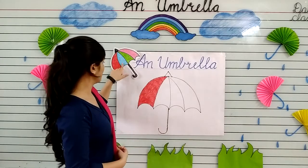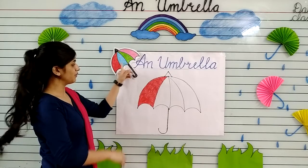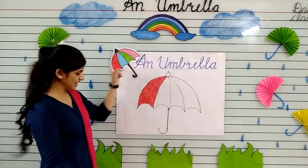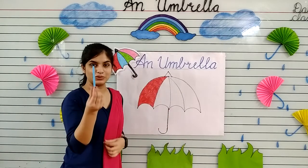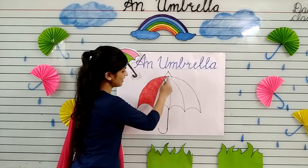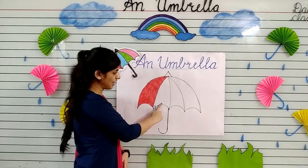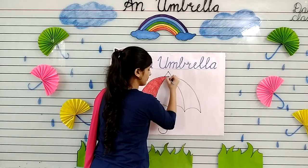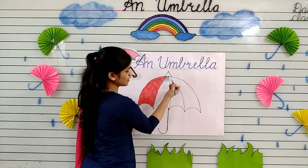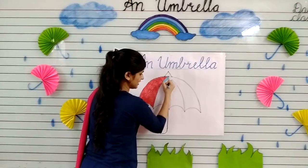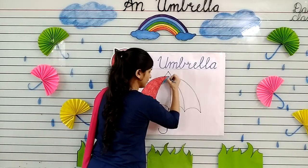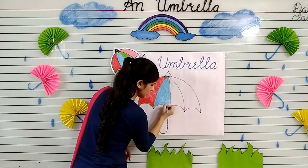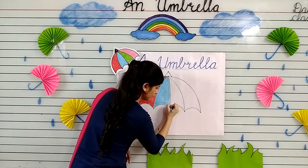Now tell me kids, which color is this? Yes, this is blue color. Now take your blue crayon and start coloring in this part of the umbrella. Again, start at the top and hold your crayon tightly. I have done my blue color.